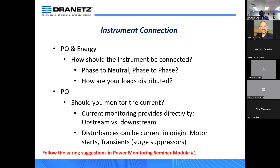Instrument connections: should the instrument be connected phase-to-neutral or phase-to-phase? It really comes down to how your loads are distributed. Usually in most PQ applications, phase-to-neutral is going to reveal more information. Particularly when it comes to harmonics, you want to look for triplens — the zero-sequencing harmonics that don't cancel out. They add in the neutral, so depending on the nonlinear loads causing those zero-sequencing harmonics, they add in the neutral, and the presence of a neutral gives you the most results in a PQ application.